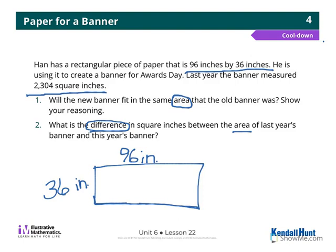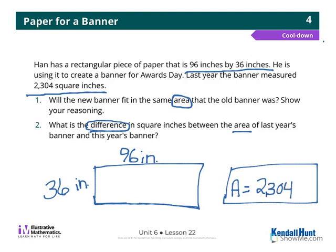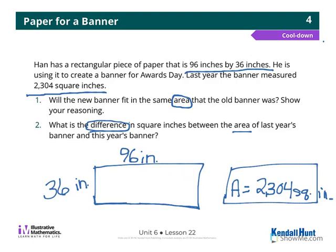Last year the banner's area was 2,304 square inches. So I'm going to subtract. I need to multiply to find the area of this year's banner, so I need to do 96 times 36.